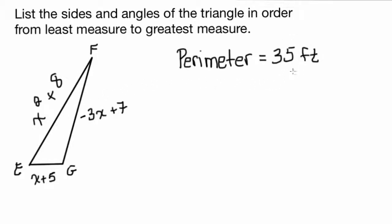We're also given the perimeter, so this part is pretty easy. If I know the perimeter and I know the lengths of the sides in terms of x, I can just add them all up and set it equal to 35, solve for x, get the measures of the sides, and then list them and list the angles.